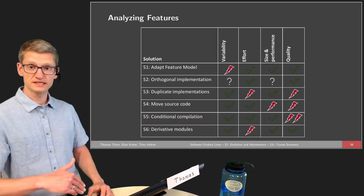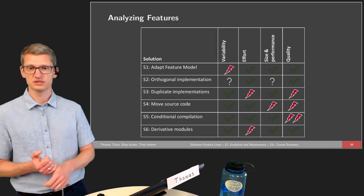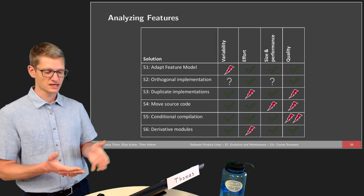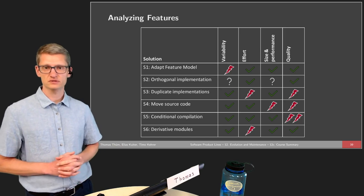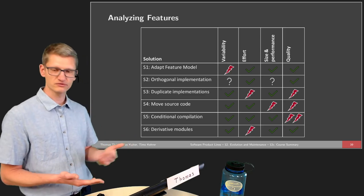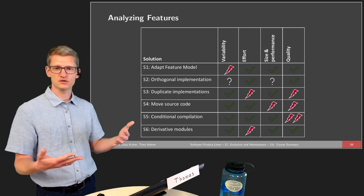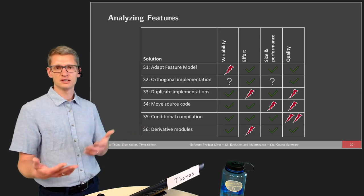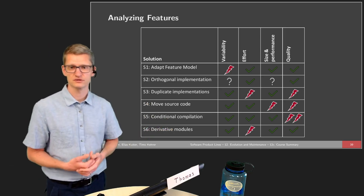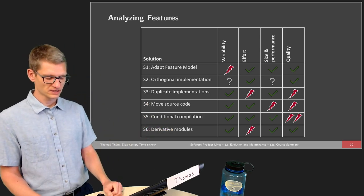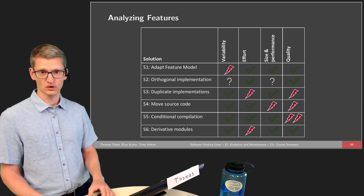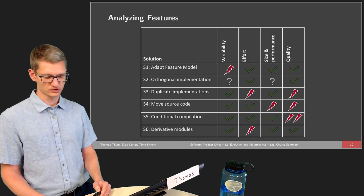Once we detect feature interactions — by means of static analysis, testing, or sampling — we need to deal with them. We looked at different strategies: changing the feature model, changing the implementation in different ways, making features orthogonal that were not orthogonal before, duplicating parts of the implementation, moving source code to other features, or using techniques specific to certain implementation approaches such as conditional compilation or creating additional derivative modules.